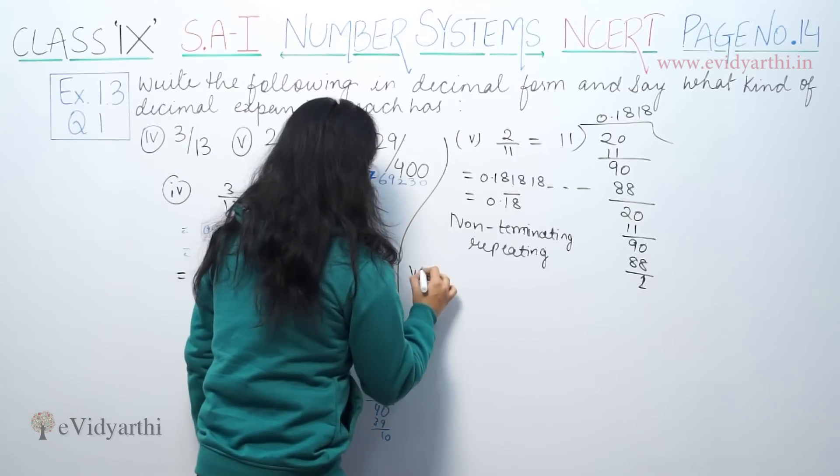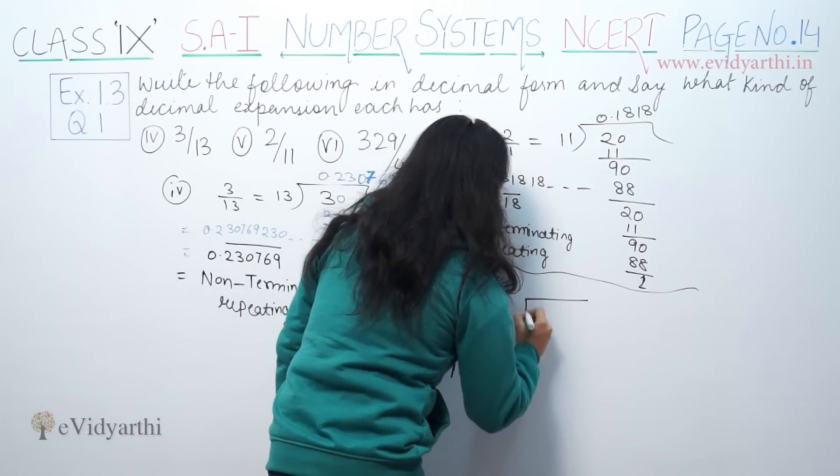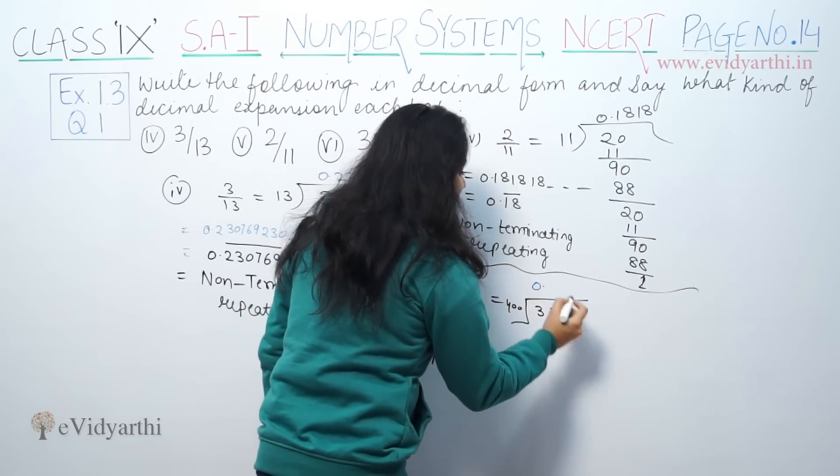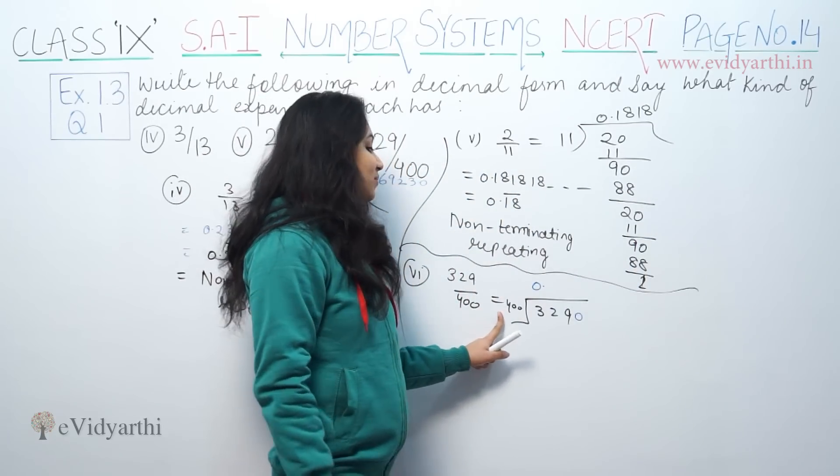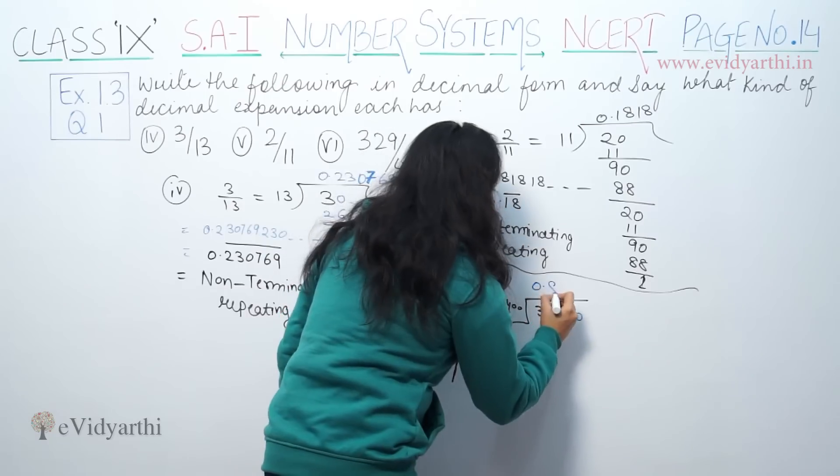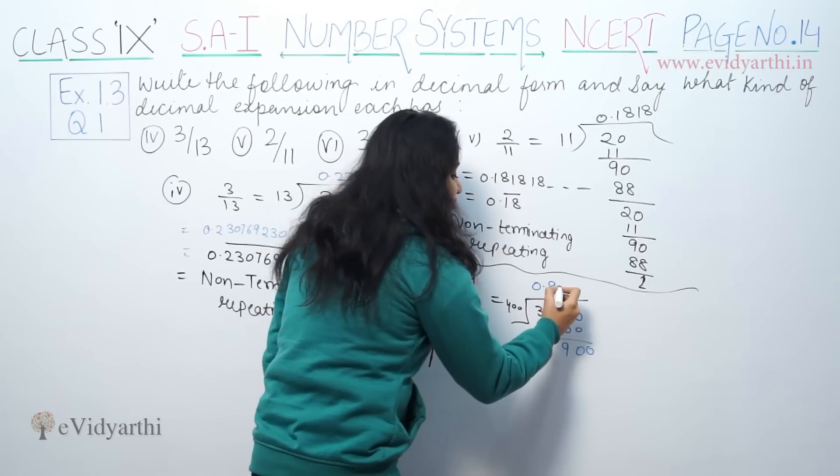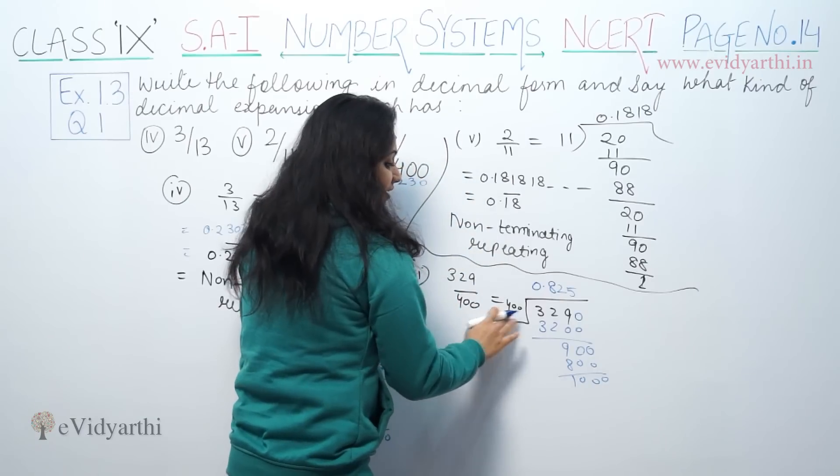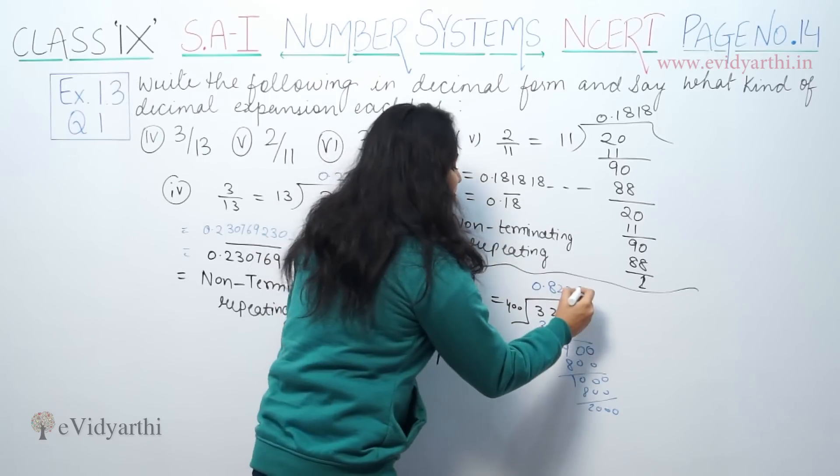Part number 6, which is 329 over 400. So 400 into 329. Now 400 in the table, there is no 329, so we put 0 decimal. Now 4 goes into 32, 8 times. 8 times 4 is 32. So if you have 100, we put 1 to make 2900. Now 400 7 times is 2800.